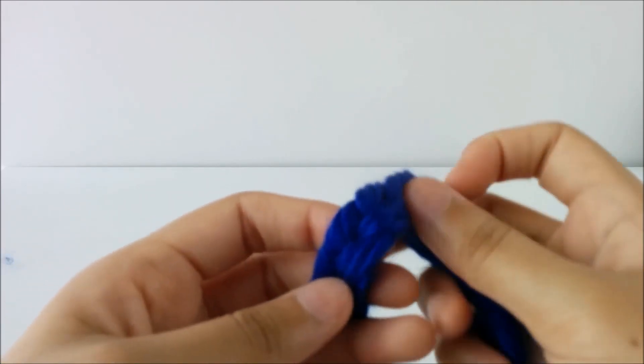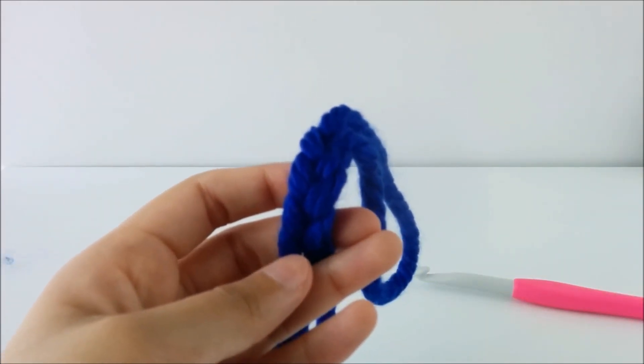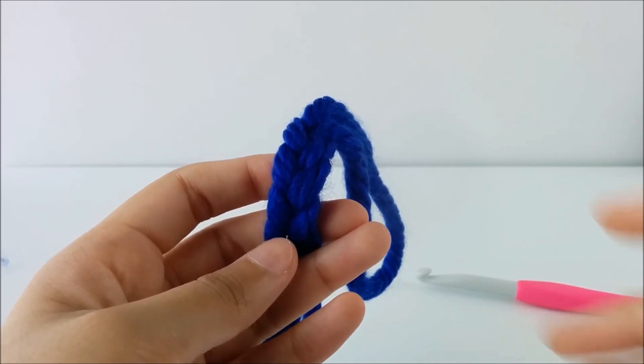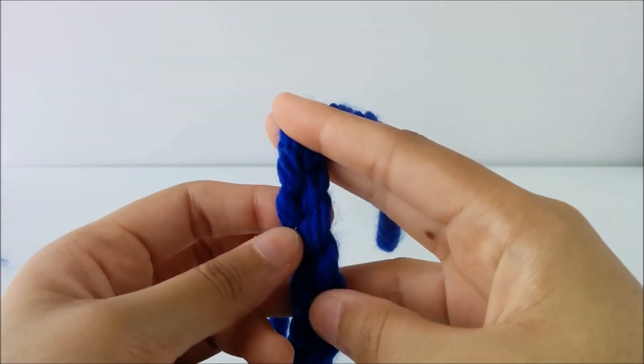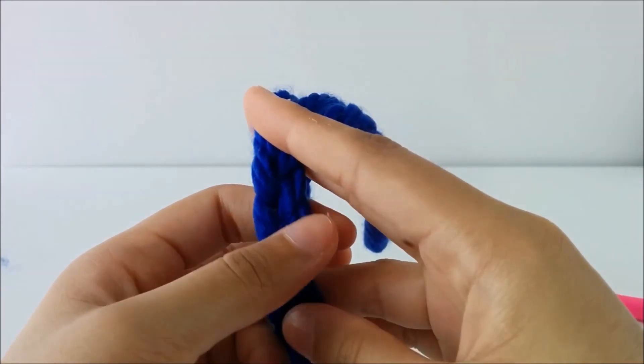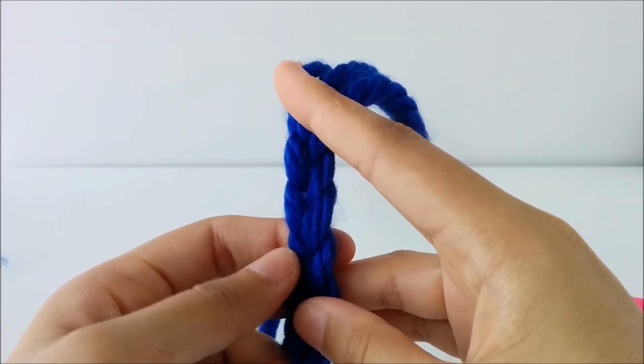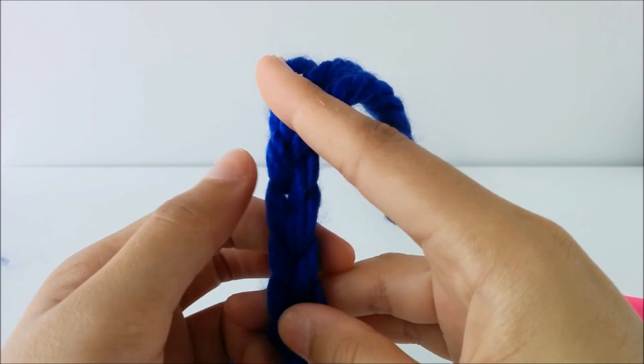You have these two legs. You have these two legs of the chain. There's one leg and the other leg. You can see they make the v-shape.